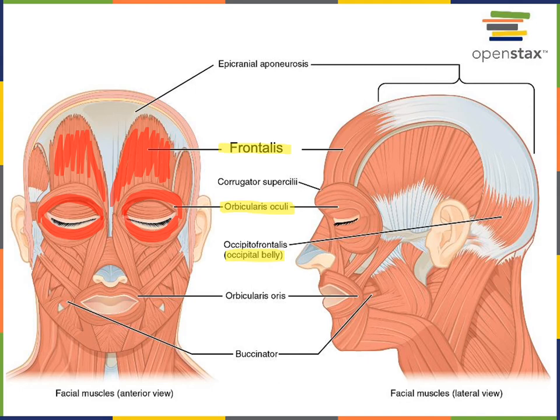There is a similarly named muscle surrounding the mouth: orbicularis oris. Orbicularis oris is a circular shaped muscle similar to orbicularis oculi. It has that circular shape but is found surrounding the oral region, and the action of orbicularis oris is to close the lips.